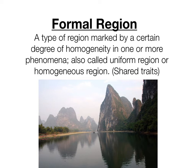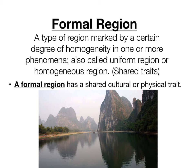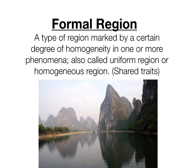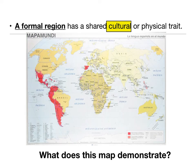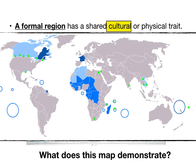Next up is formal region, defined as a type of region marked by a certain degree of homogeneity in one or more phenomena — also called a uniform or homogeneous region. In other words, it has shared traits. A simpler definition: a formal region has a shared cultural or physical trait. An example is a region in China with karst rock formations — a shared physical trait. The Spanish-speaking countries of the world form a formal region with a shared cultural trait, as do the French-speaking countries of the world.